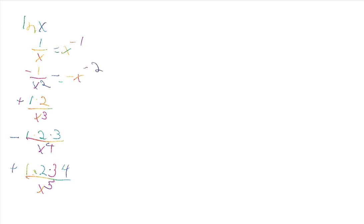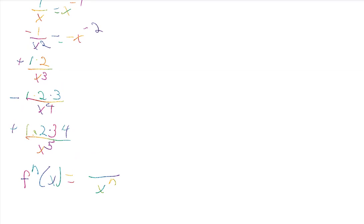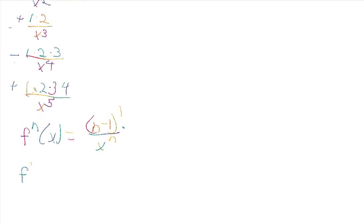Looking at the pattern: the nth derivative has x to the n in the denominator, and the numerator is n minus 1 factorial. So the n plus first derivative is n factorial over z to the n plus 1. Substituting into our error formula: n factorial over z to the n plus 1, divided by n plus 1 factorial, times 0.2 to the n plus 1, less than 1 over 1,000.